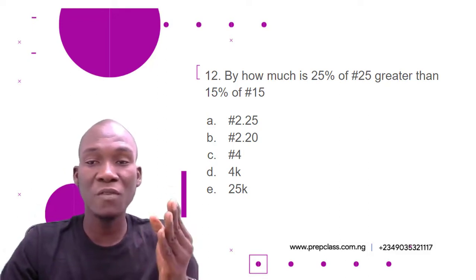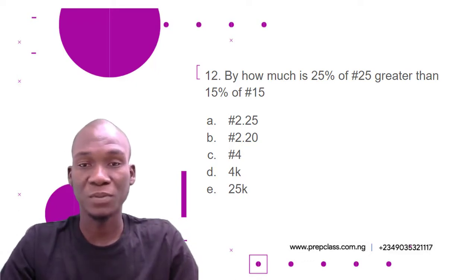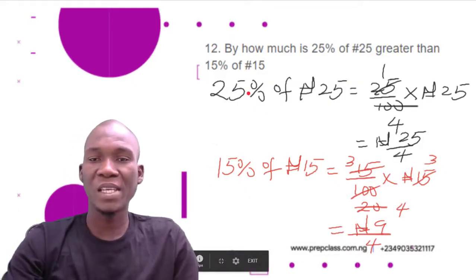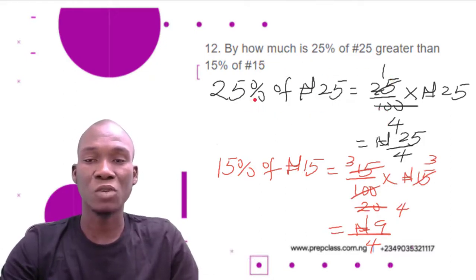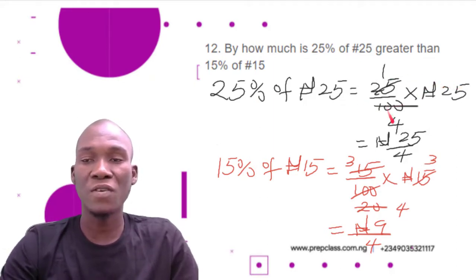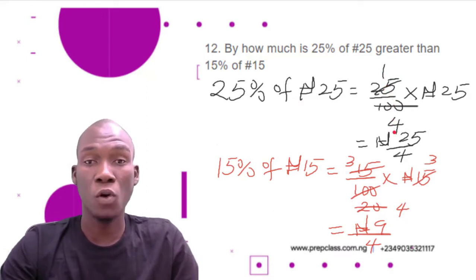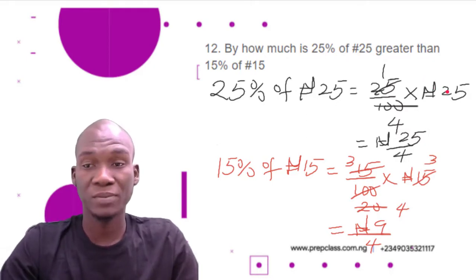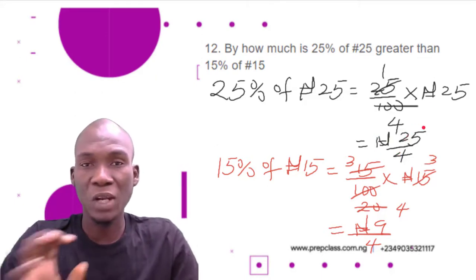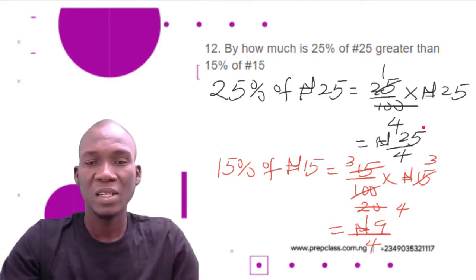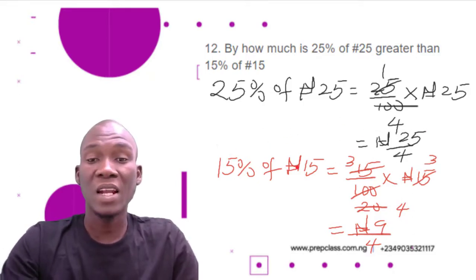The difference is going to be the bigger value minus the smaller value. Now 25 percent of 25 naira is the same as 25 divided by 100 — that is, 25 over 100 — times 25 naira. Now 25 over 100: 25 into 25 is 1, 25 into 100 is 4, multiplied by 25 naira. At this point we have 25 naira divided by 4, which gives us 25 over 4 naira. We leave our answer in that form.